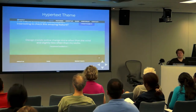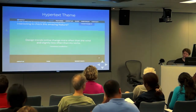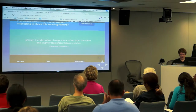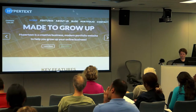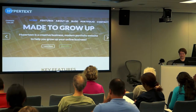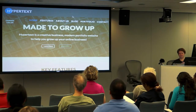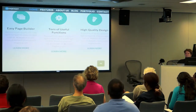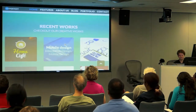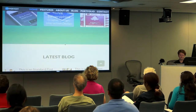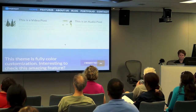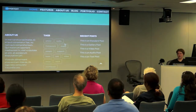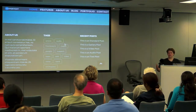Now we're seeing flat design pop up in WordPress themes. You can see really strong, bold colors — these greens. It's simple. There are no shadows, no gradients. Lots of big, huge swaths of solid colors.